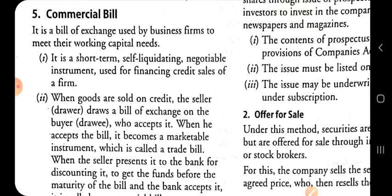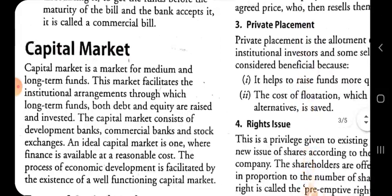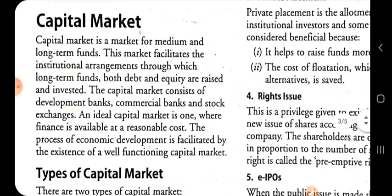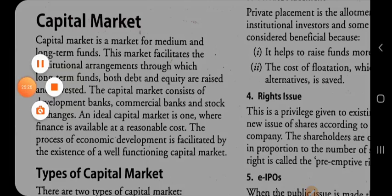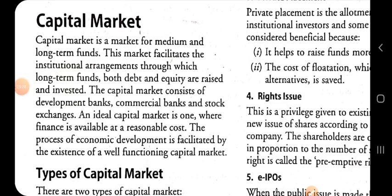So here are the five important money market instruments: Treasury bill, commercial paper, call money, certificate of deposits, and commercial bill. Now we will move to the second type of market, that is the capital market. The capital market is a market for medium and long term funds. This market facilitates the institutional arrangement through which long term funds — both debt and equity — are raised and invested. The capital market consists of development banks, commercial banks, and stock exchanges.